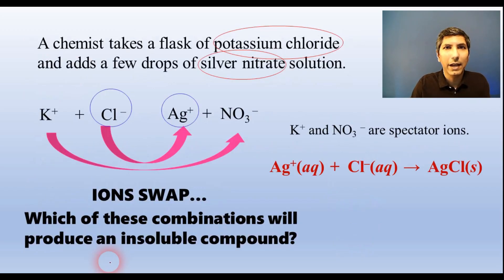In precipitation reactions, two soluble ionic compounds combine, and two of the ions join together to form a solid precipitate, like in this example, between solutions of silver nitrate and potassium chloride. You don't need to memorize all the solubility rules. Just remember that compounds containing alkali metal ions, ammonium, and nitrates are always soluble in water, so the other compound must be the precipitate.